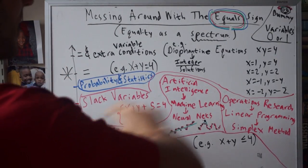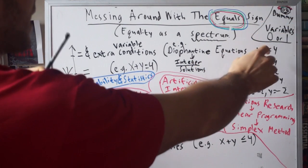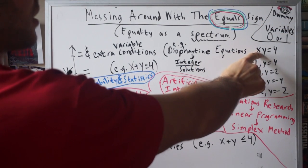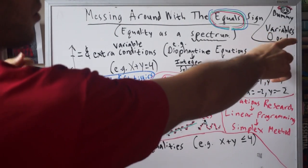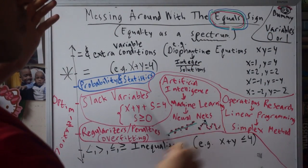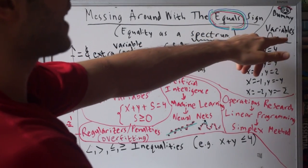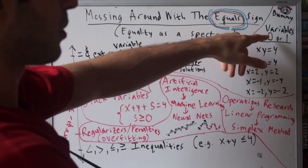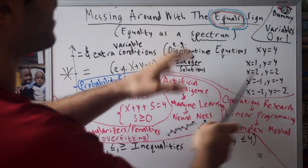Over here you can also have dummy variables. x and y don't have to be integers, they could be dummy variables which means they take on the value 0 or 1. This might indicate that something is present and a 0 might mean it's absent or not there.